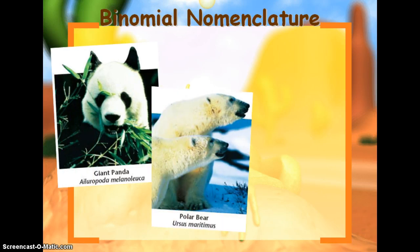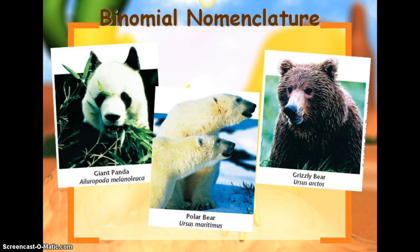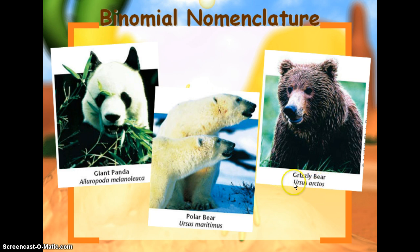Here are a couple more examples, although there is one mistake in the picture — it should be Arctos and Maritimus. Notice the genus name and species name for giant panda. For grizzly bear and polar bear, notice that the genus name is the same — Ursus — like your last name. Then the species name is more specific to each one to identify them separately.